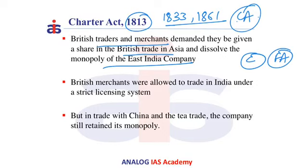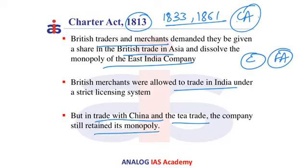The British government did not yield completely to these demands by the English traders. Rather, British merchants were given permission to trade in India, but the trade with China and the tea trade in India were completely reserved for the East India Company. These two provisions were established through the Charter Act of 1813.